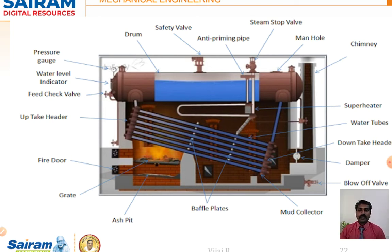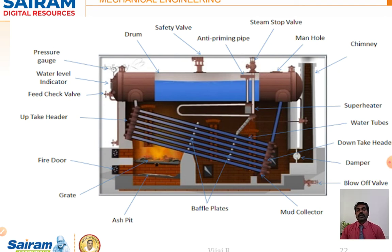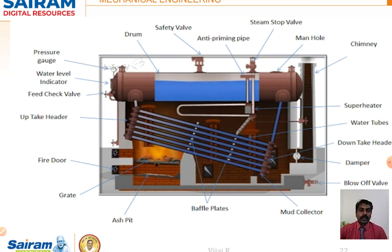Water from the drum goes down to the downtake header and fills into the tubes. At the bottom, coal is fired on a grate where fuel is burned. Hot flue gases spread across the entire area and pass over the tubes. Baffle plates direct the flue gas in a zigzag path to ensure contact with every tube, and the gases then travel to the chimney visible at the right end.